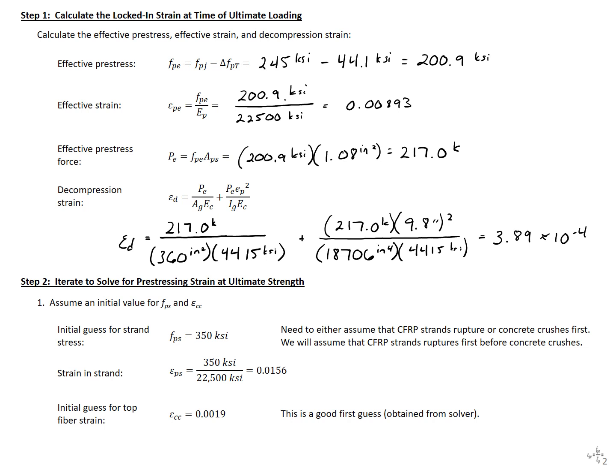Our next step is to iterate to solve for our prestressing strain at ultimate strength. We need to assume either that our CFRP strands rupture or that our concrete crushes in the extreme compression fiber first. Here we'll assume that our CFRP strands rupture first before the concrete crushes. So we'll assume that our strand stress is the ultimate strength, 350 ksi. We can calculate the strain in the strand because CFRP is linear elastic until rupture, so we take 350 divided by the stiffness of the strand. Then we make a guess at our top fiber strain in the concrete — I've already iterated, so this is a good first guess that we'll use for the rest of the problem.